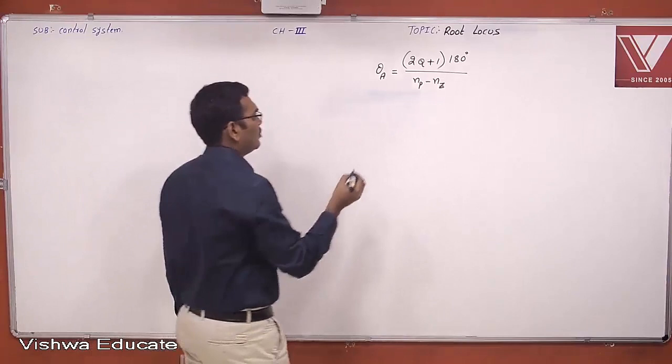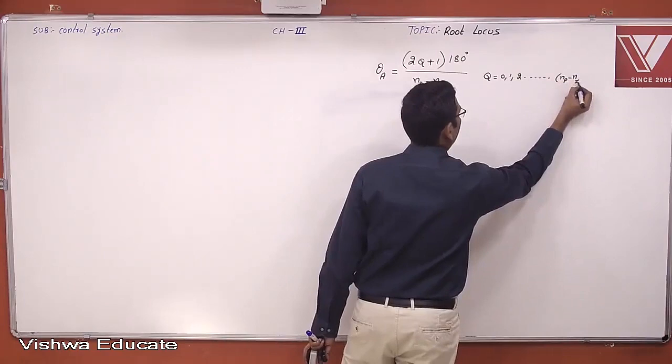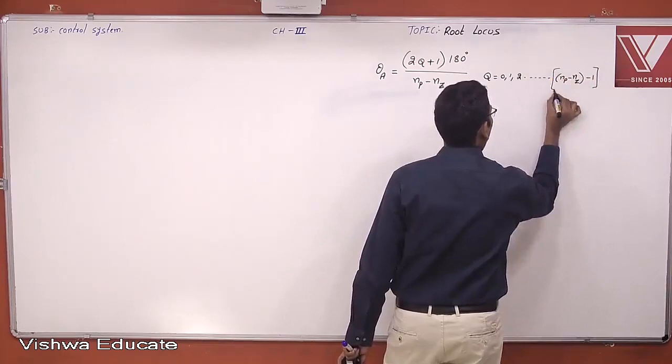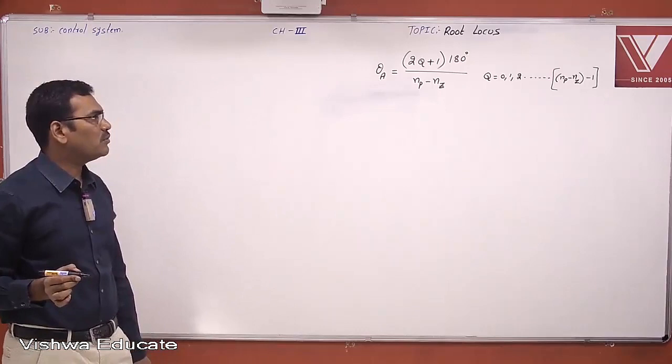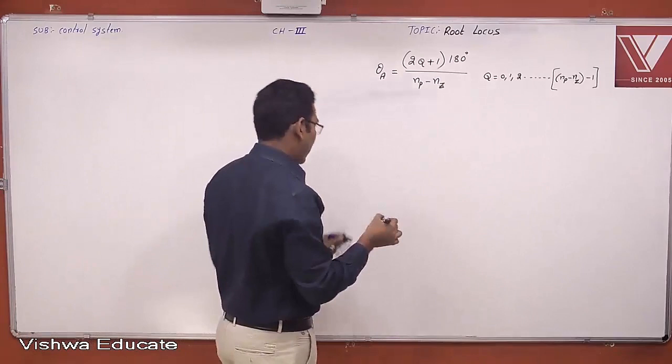In this formula, q ranges from 0, 1, 2 and so on up to (Np − Nz − 1). So the angle of asymptote equals (2q + 1) × 180° divided by (Np − Nz), where q = 0, 1, 2, 3, ... up to (Np − Nz − 1).